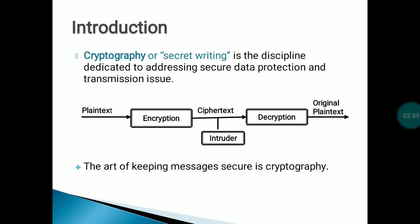That ciphertext is then decrypted at the receiver's end, and the receiver gets back the original plain text. The intruder is the one who may try to fetch that information by entering the network or by trying to identify the pattern of the message being sent.